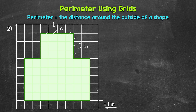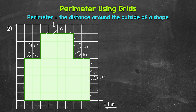Looking straight across, the opposite side is three inches as well. Then we have two inches here, and the other side is two inches as well. Coming down along this side: one, two, three, four, five inches. The left side straight across is five inches as well — those sides are the same. And then the bottom: one, two, three, four, five, six, seven, eight inches.